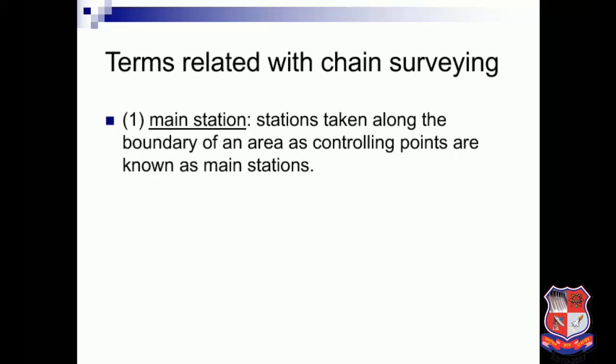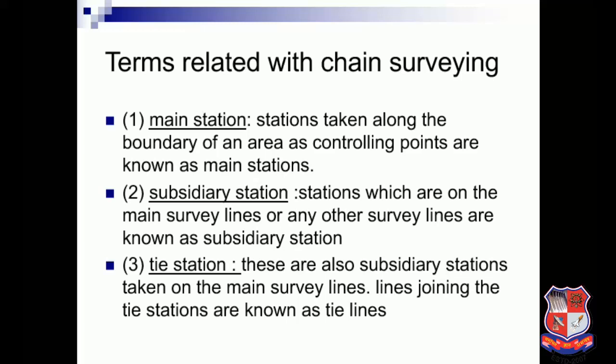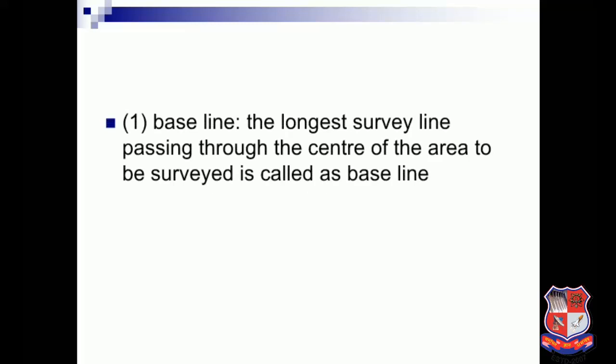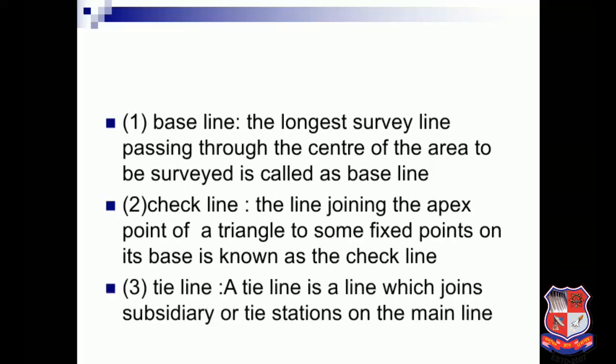Terms related to chain surveying: A main station refers to stations taken along the boundary of an area as controlling points. Subsidiary stations are stations on the main survey line or any other survey line. Tie stations are subsidiary stations taken on the main survey line; lines joining tie stations are known as tie lines. The baseline is the longest survey line passing through the center of the area to be surveyed. A check line joins the apex point of a triangle to some fixed point on its base. A tie line joins subsidiary or tie stations on the main line.